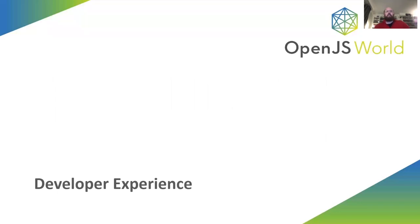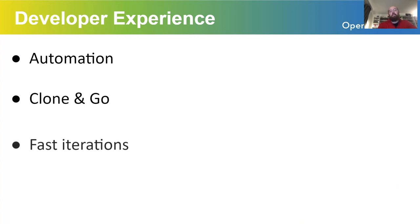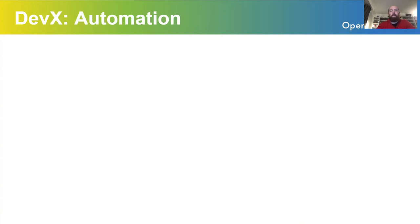Let's talk about developer experience. There's a lot to say, but today we'll focus on three core axes: automation, something I call clone-and-go, and the iteration feedback loop. Automation is about decreasing the cognitive complexity of developers joining a project, making it very approachable — whether it's an open source project needing external contributors, or a company product onboarding new developers every year. Automating processes decreases the knowledge required before being productive.